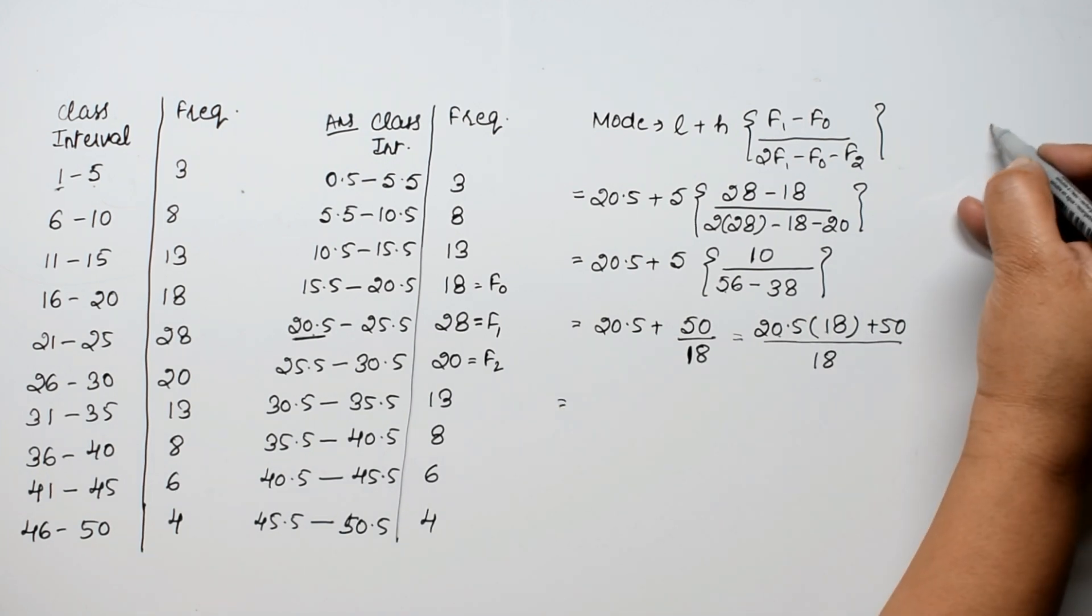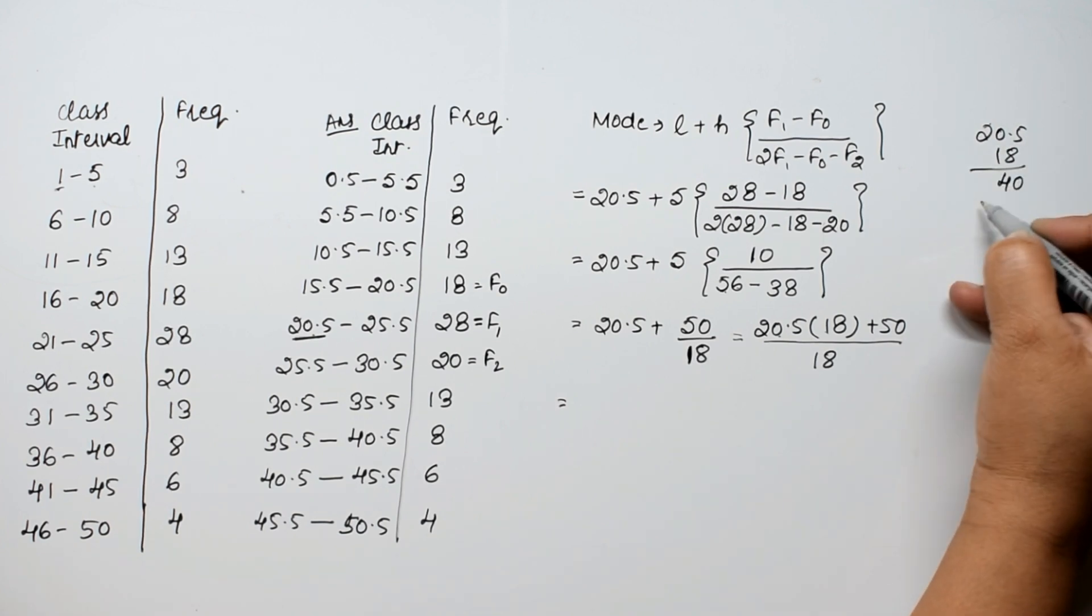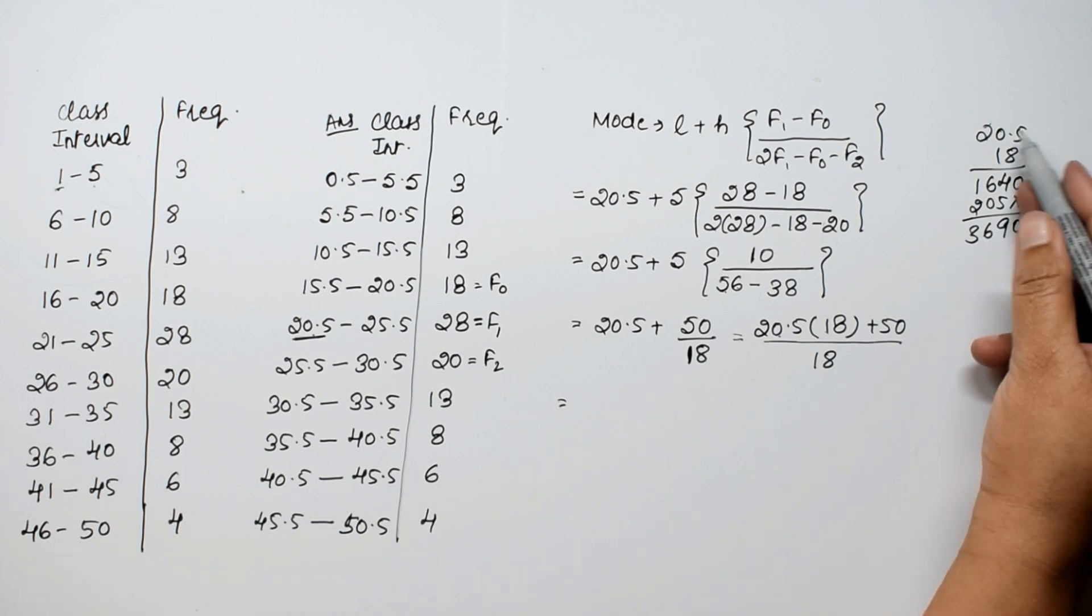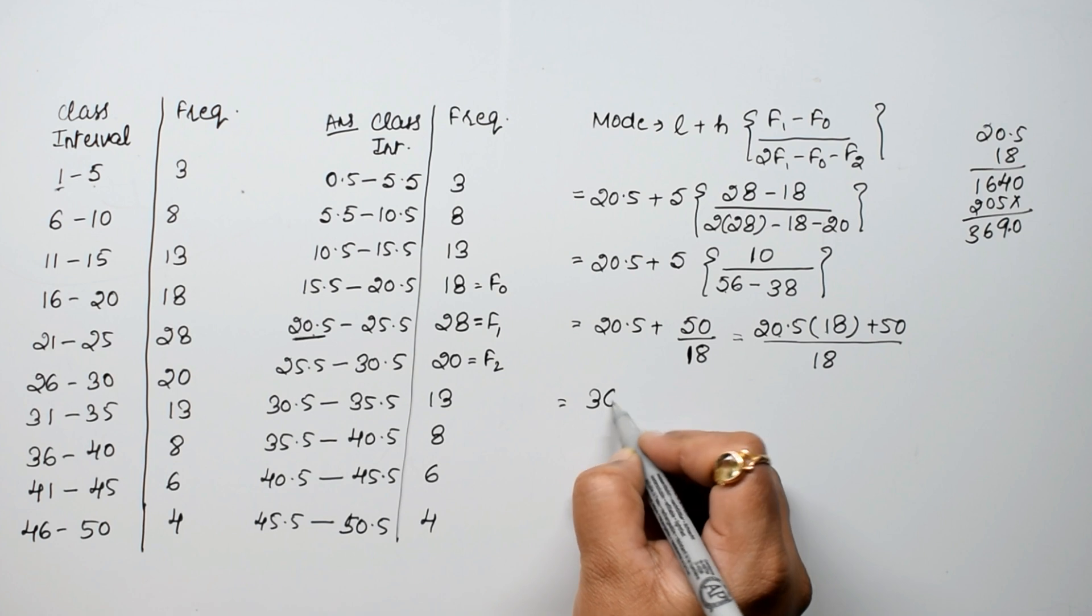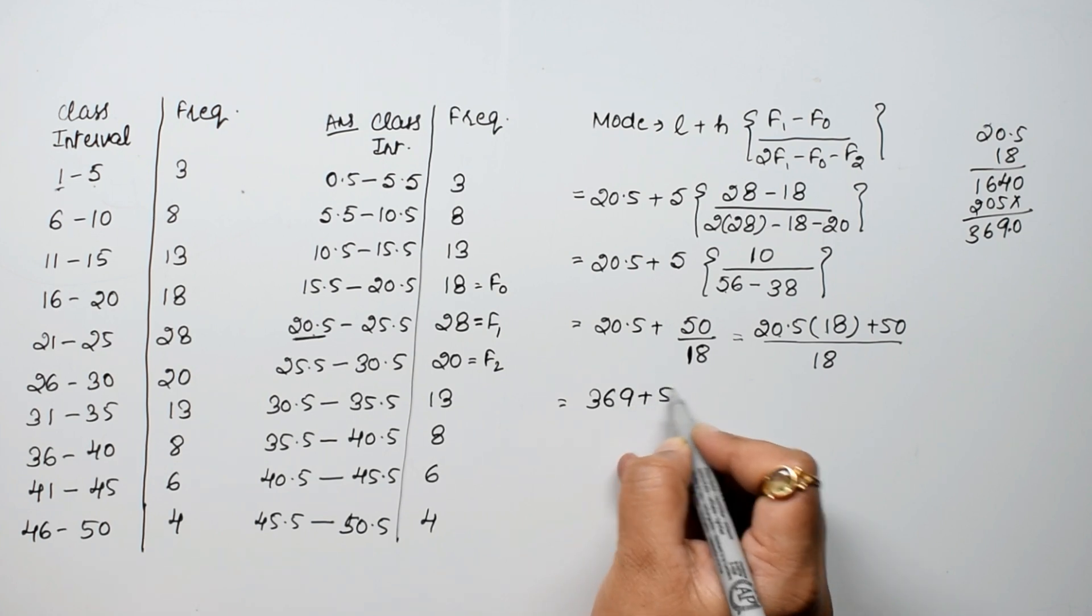Let's multiply 20.5 into 18. 5 times 8 is 40, 5 times 2 is 10 plus 4 is 14. Then 0, 2 times 8 is 16, 2 times 2 is 4 plus 1 is 5. This gives us 369, with the decimal point making it 369.0 plus 50 upon 18.